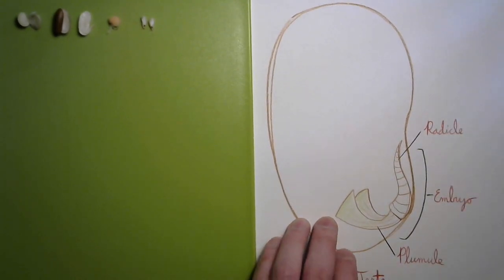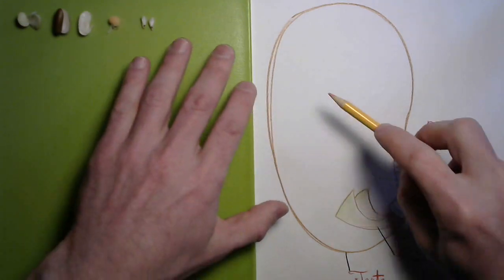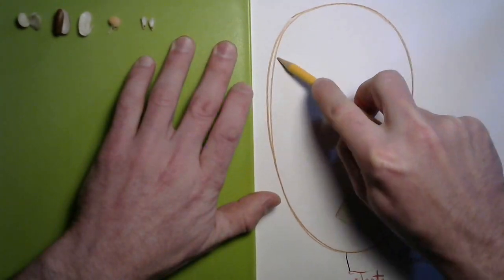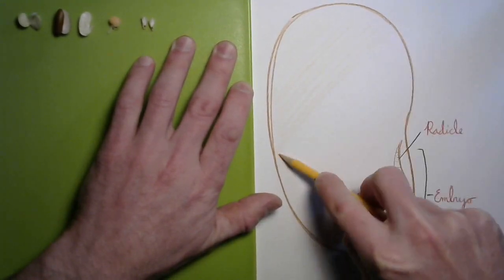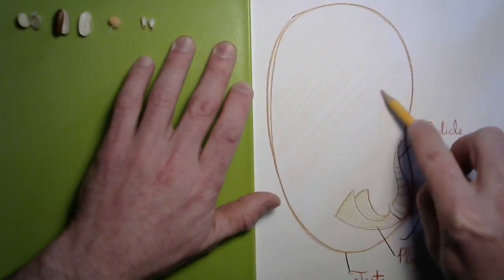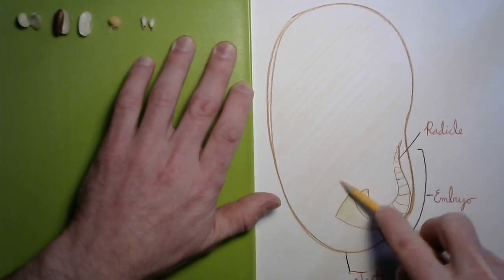There's only one part left that we haven't labeled in our seed, and it's the biggest one. Remember those food pouches we talked about? Now there's different kinds of seeds, and really, two main different kinds of seeds.